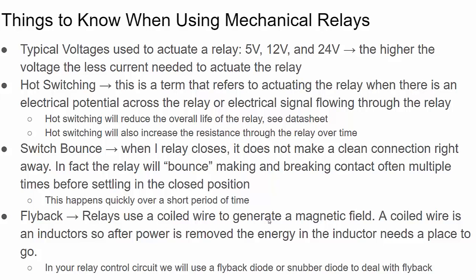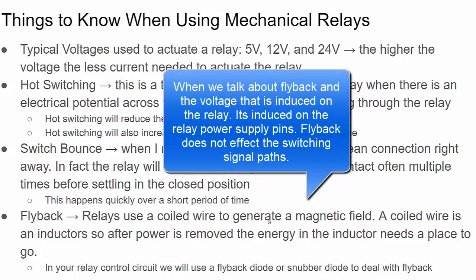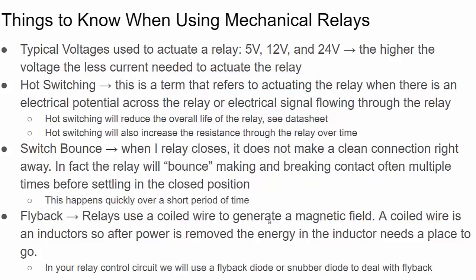The last topic I want to cover is flyback. Both reed relays and armature relays have coils in them for the magnetic field. If you know about inductors, it takes time for the magnetic field to build up once you apply current to the coil, and after you remove the current the magnetic field doesn't just disappear - it starts to collapse and induces an electrical signal onto the conductor in the coil. Flyback is the phenomenon that when you pull power off a relay, the magnetic field collapses and induces a voltage onto that relay, which can cause your power supply voltage level to raise up. There are techniques to deal with the flyback effect, which we'll look at in the example video and also cover in detail in part two.